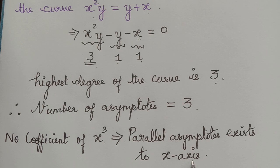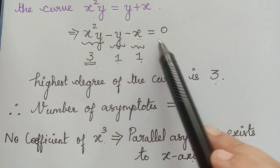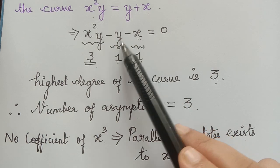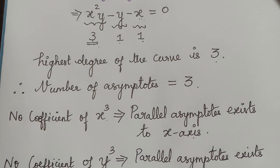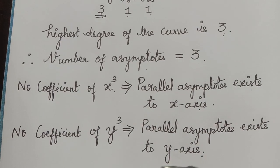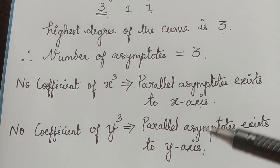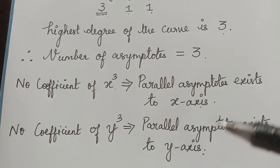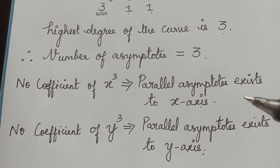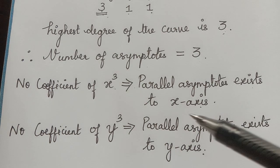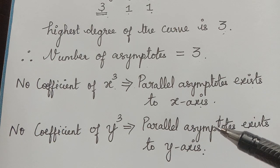Similarly, we check for y. There is no y³ term in this equation, which implies there is no coefficient for y³. Therefore, parallel asymptotes exist to the y-axis. After confirming the existence of parallel asymptotes, we have to find the asymptotes parallel to the x-axis and the asymptotes parallel to the y-axis.